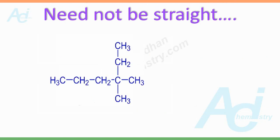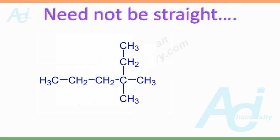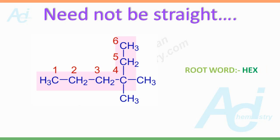One more important aspect is that the parent chain need not be straight. Most students are confused with this. For example, look at this molecule — the longest continuous chain of carbon atoms is not the straight one. There are 6 carbon atoms arranged continuously but not in a straight line. This should be selected as the parent chain and the root word must be hex.